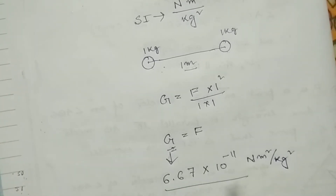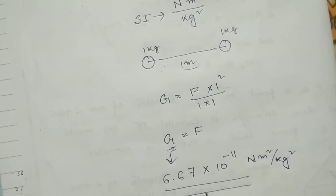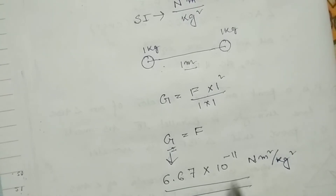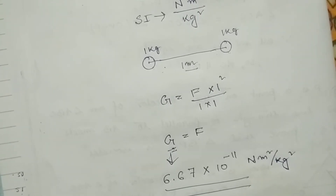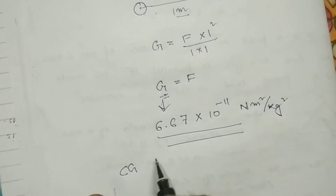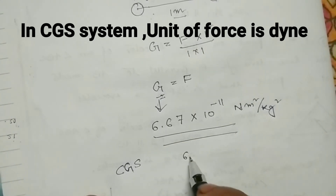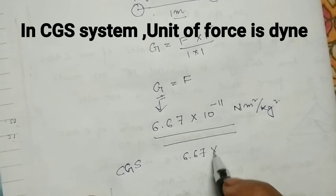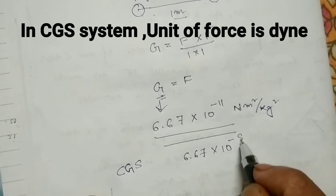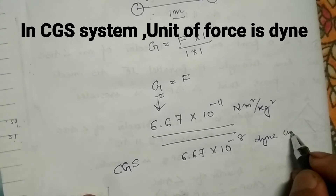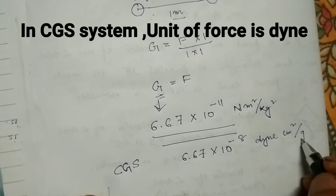This value is constant everywhere. If you go to Saturn, Jupiter, the Sun, or anywhere in the universe, the value of capital G is not going to change — it will remain constant. In the SI system this is the value, and in the CGS system the value of capital G is 6.67 into 10 to the power minus 8 dyne centimeter square by gram square.